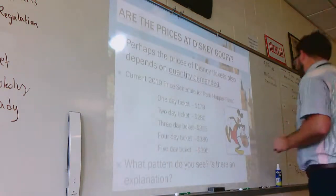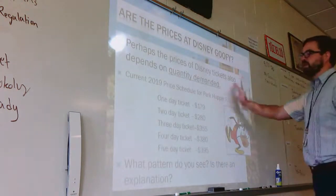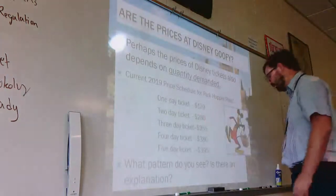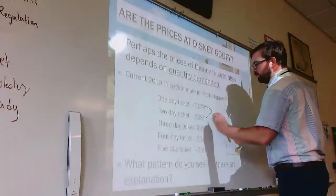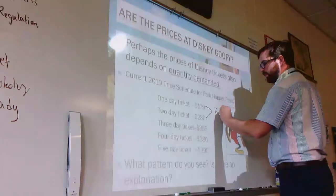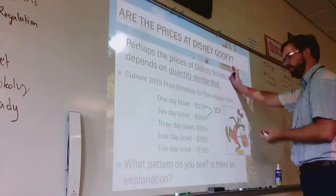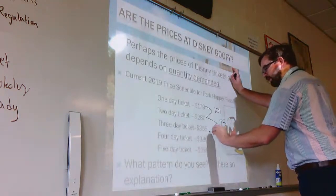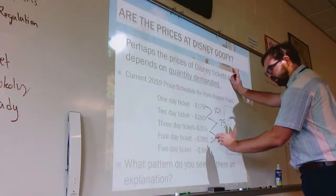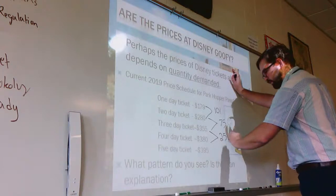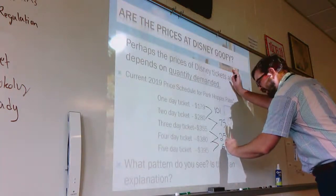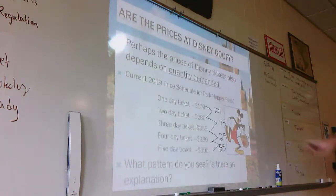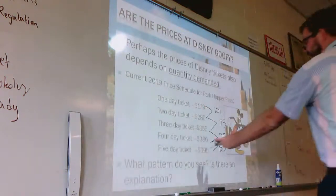Let's look at a good example with Disney World tickets. A one-day ticket is $179. If you buy a two-day pass, that second day costs about $101 more. The third-day ticket costs about $75 more. The fourth ticket is only an extra $25, and the fifth day is only an extra $15. The real question is: why would they lower prices that much? Why is that last ticket only worth $15 when one ticket is $179?